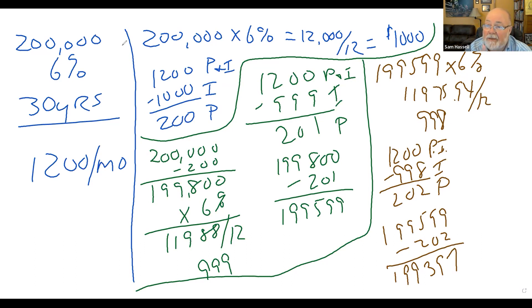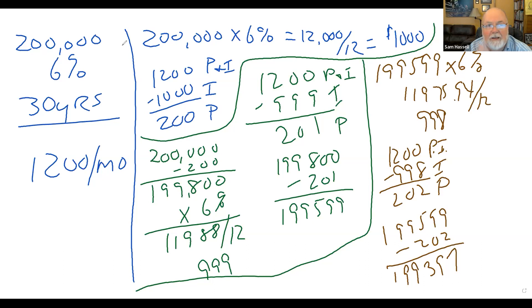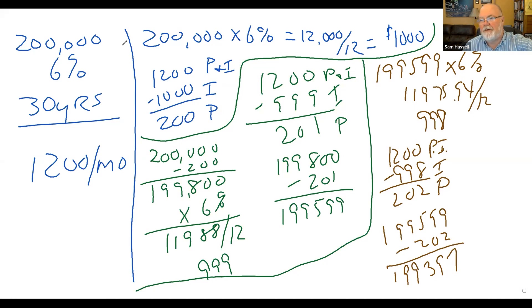It is always simple interest. We didn't do anything tricky here. No fun facts — our fingers never left our hands. All we did was multiplication and division. Because why should I pay 6% on $200,000 all in? I don't owe $200,000 anymore after the first month. I owe less, and in the next month, I'll owe less again.